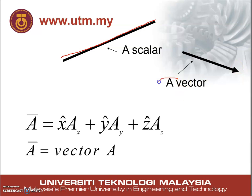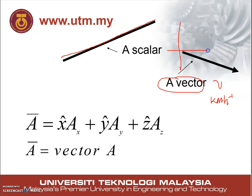Whereas for a vector, it's a quantity having both magnitude and direction. So let's take for example one of the quantities we have seen in daily life, such as velocity — let's say velocity is in kilometers per hour. So let's say we draw some axes: this is the north, this is the east, and this is the south. So imagine this is a car moving towards southeast at 30 kilometers per hour. So we have the magnitude and we have the direction.